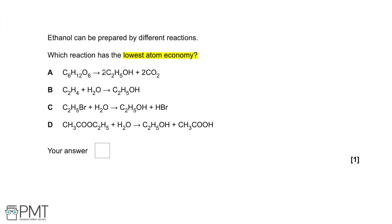We need to look at each of these reactions and figure out which one has the lowest percentage of atomic mass in the desired product. Reaction B catches my eye because we only have one product and that product is ethanol. If we only have one product, then every single atom in our starting materials ends up in our desired product, so B gives us an atom economy of 100% — it can't be B.